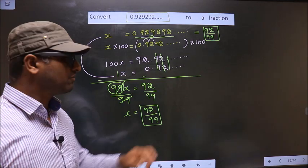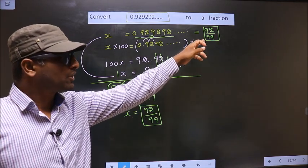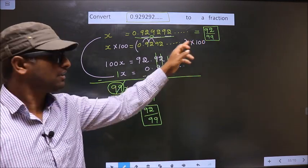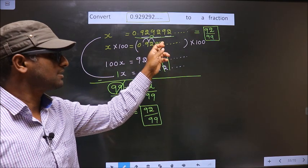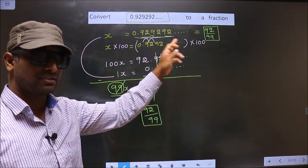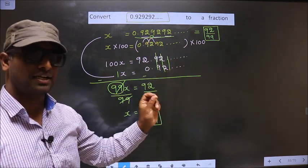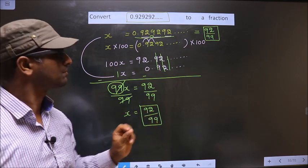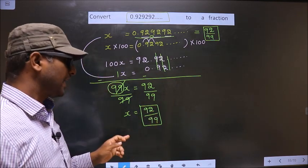If you wish to confirm your answer, put this in the calculator. You should get this recurring decimal. If you get this, your fraction is correct. Otherwise, not. Am I clear?